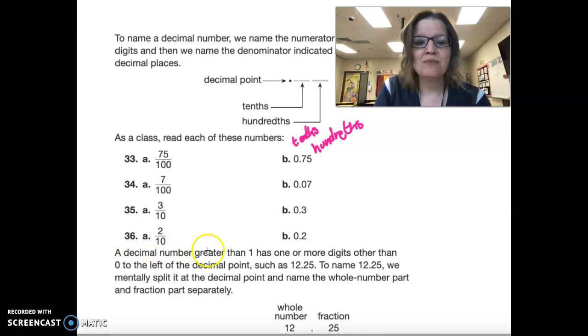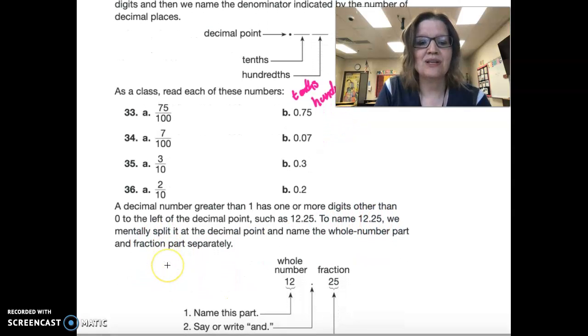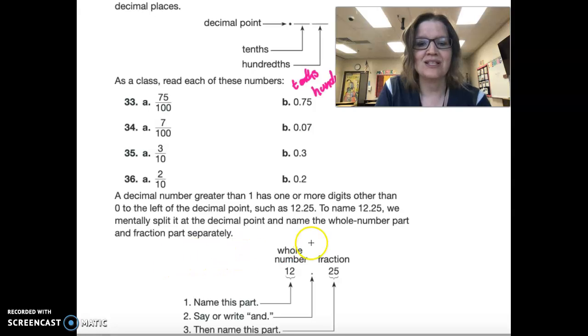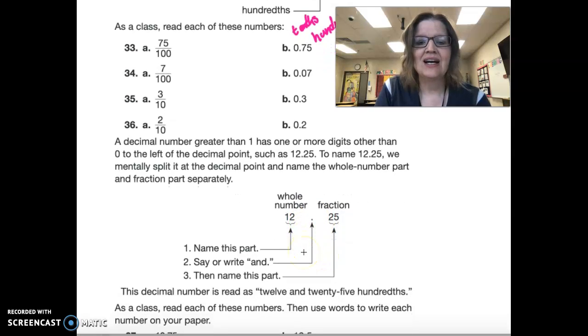Let's read this. A decimal number greater than one has one or more digits other than zero to the left of the decimal, such as twelve and twenty-five hundredths. To name twelve and twenty-five hundredths, we mentally split it at the decimal point. And we first name the whole number. Then we say and.